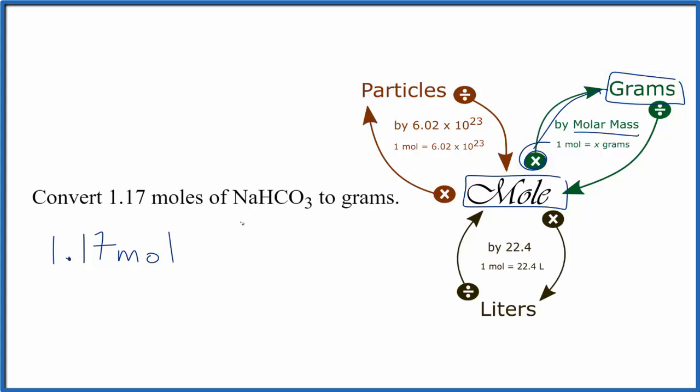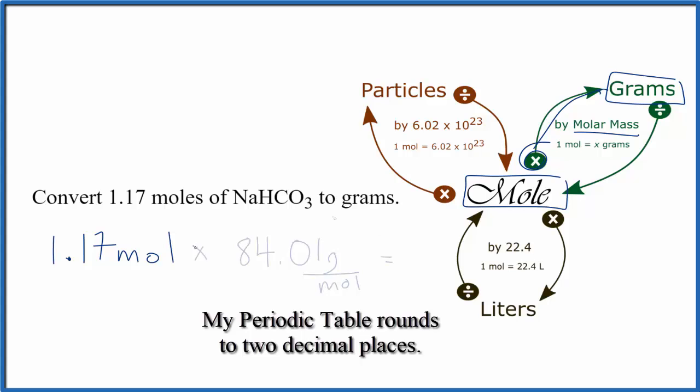We find the molar mass for NaHCO3 by going to the periodic table and adding up all the masses for the individual elements. So we get 84.01 grams per mole. That's our molar mass for the sodium bicarbonate.